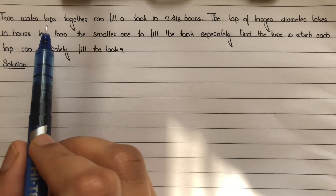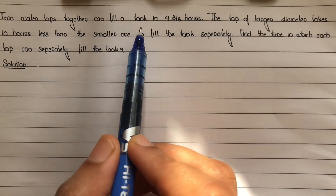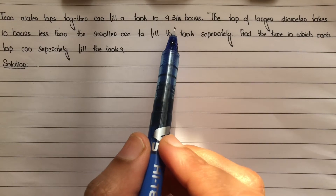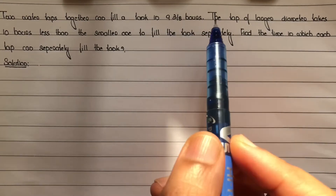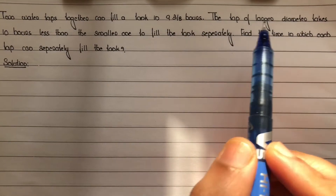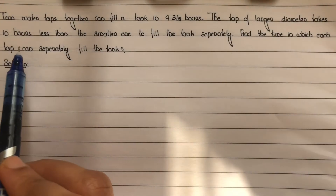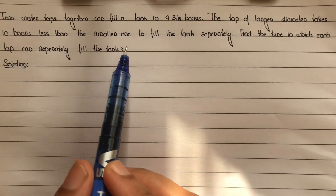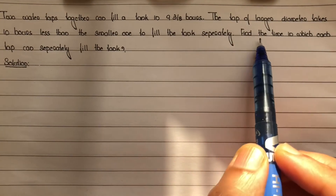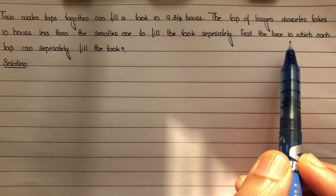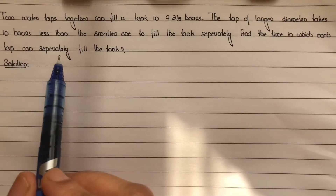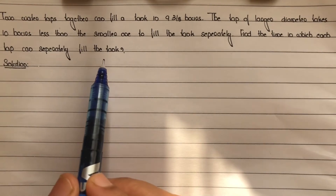Two water taps together can fill a tank in 9 and 3 by 8 hours. The tap of larger diameter takes 10 hours less than the smaller one to fill the tank separately. Find the time in which each tap can separately fill the tank.